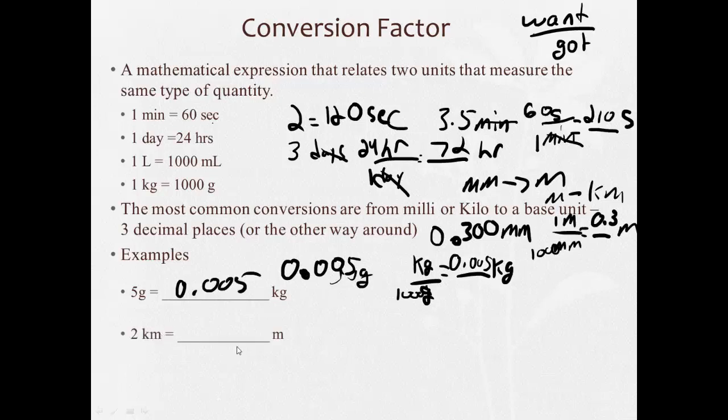Two kilometers is how many meters? Well, this is beautiful. Kilo means 1,000. So, two kilometers means 2,000 meters.